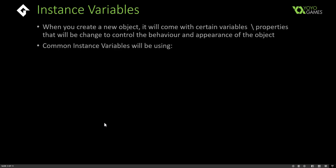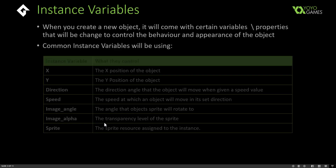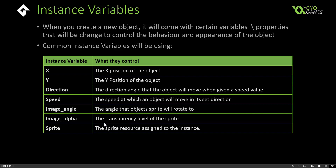Game Maker provides a number of common instance variables for all objects you create. They come with X and Y values, a direction value, a speed value, an image angle value, an image alpha value (the transparency level of the sprite), and obviously the sprite itself. What I'm going to do is overwrite the direction, speed, and image angle variables for the gamma ray object, giving them default values through the variable definitions window.